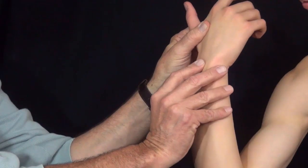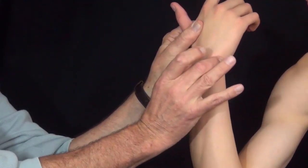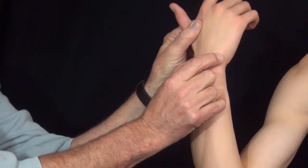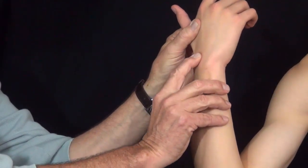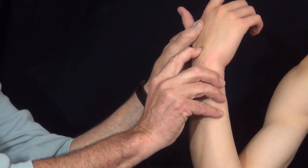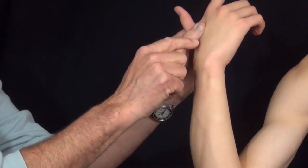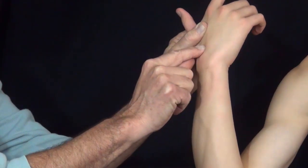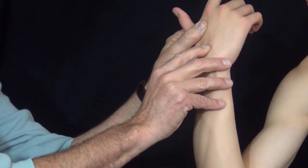If you take Lister's tubercle, which is this palpable bony prominence, about halfway between the ulnar styloid and the radial styloid, a little bit more towards the radial styloid, and you drop your finger distally, you drop into a space. And that space corresponds to the meeting of two carpal bones, the scaphoid and the lunate. And that's where the scapholunate ligament is.